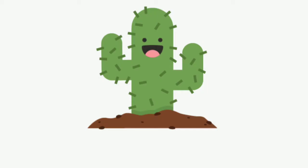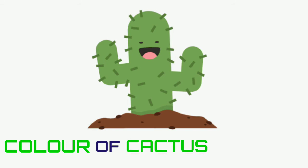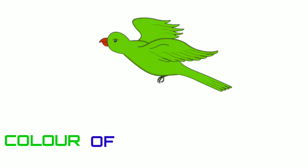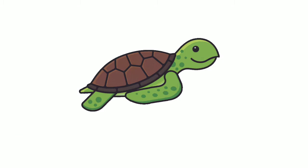Color of Cactus is Green. Color of Parrot is Green. Color of Turtle is Green.